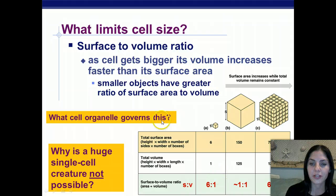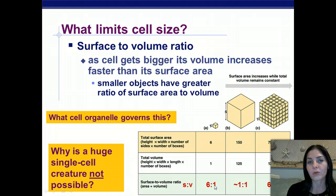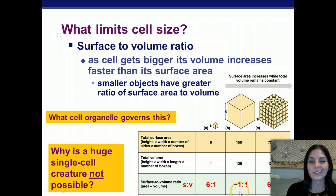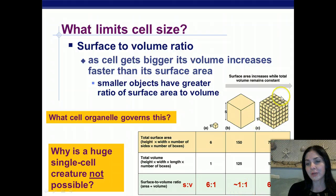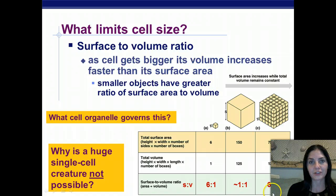Looking at these cubes: the really small cube has a surface area to volume ratio of 6 to 1 — that's a very good ratio. A medium cube has a 1 to 1 ratio — not so good. And the large cube made out of many mini cubes has a very poor surface area to volume ratio.